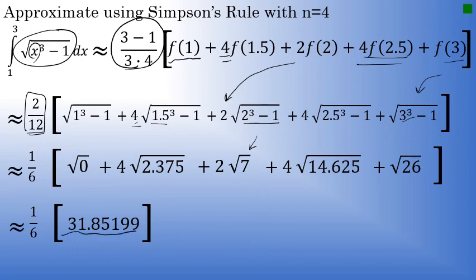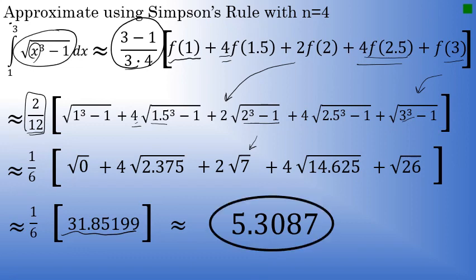When I take that number and multiply it by 1 sixth, I get an approximation for the integral from 1 to 3 of the square root of x to the third minus 1 using Simpson's rule with n equals 4. It is 5.3087.